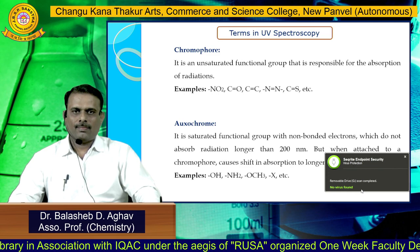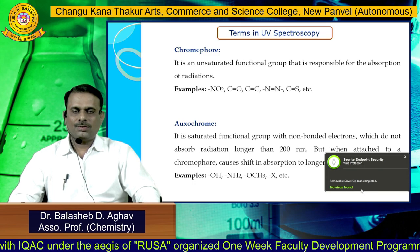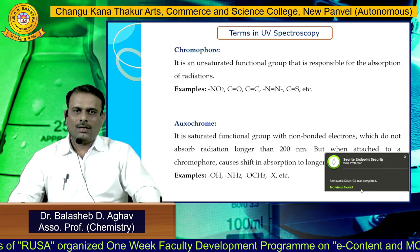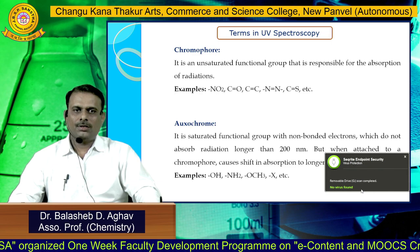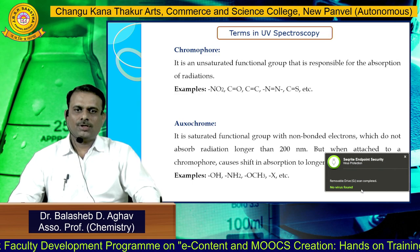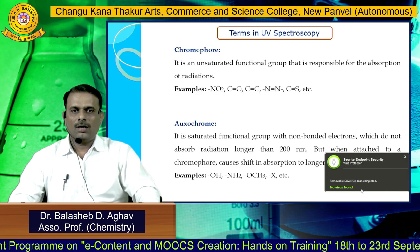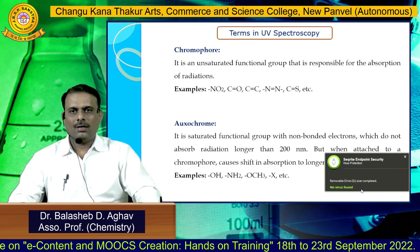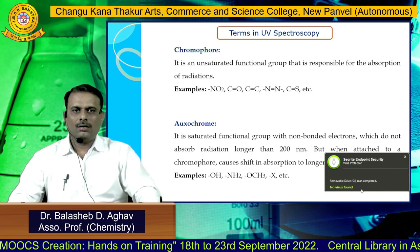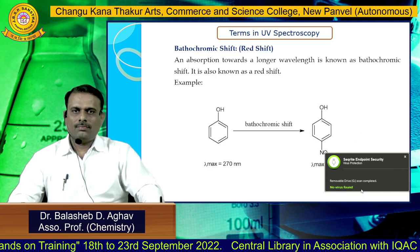The second important term is auxochrome. Auxochromes are saturated functional groups having non-bonded electrons. They do not absorb radiation longer than 200 nanometers, but when attached to a chromophore they cause a shift of absorption towards longer wavelength. Examples include saturated functional groups like hydroxyl group, amino group, methoxy group, and halogens.